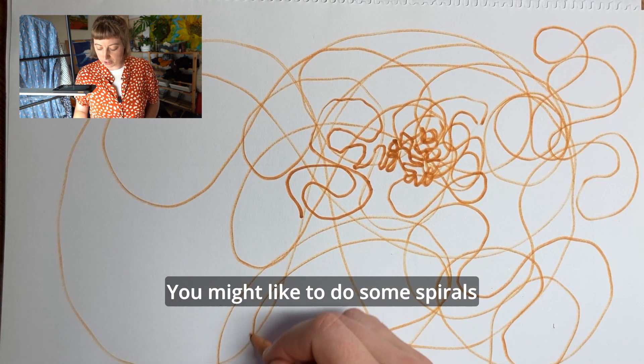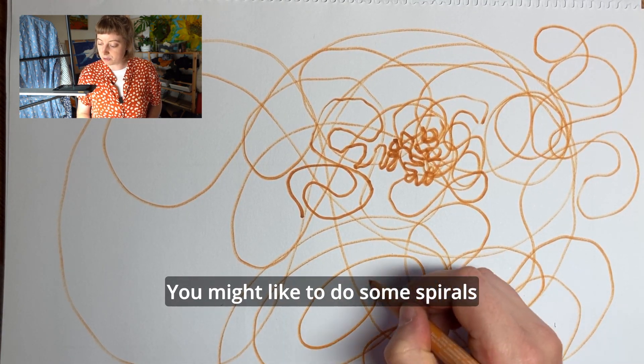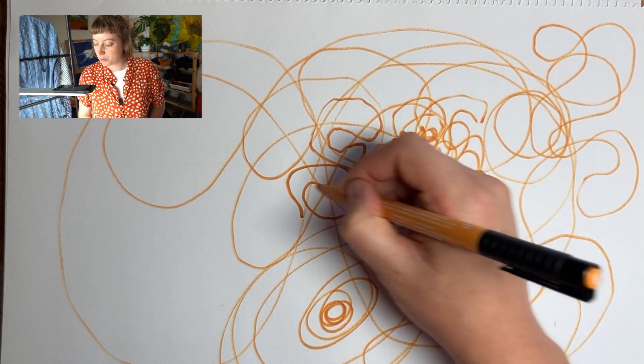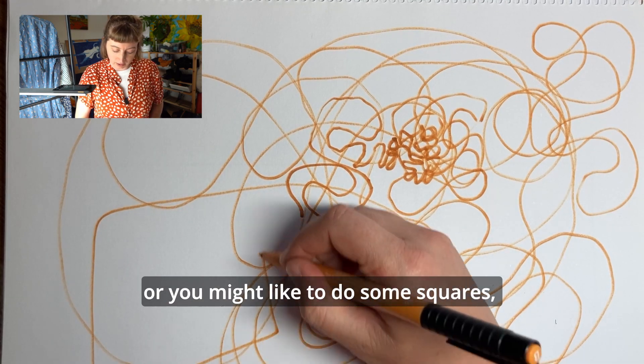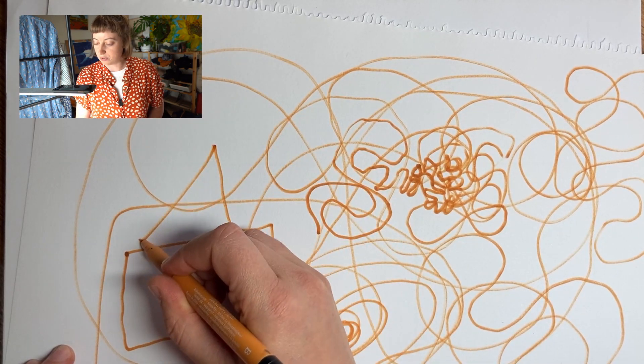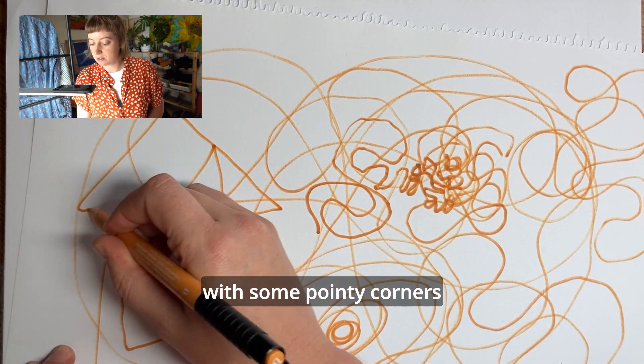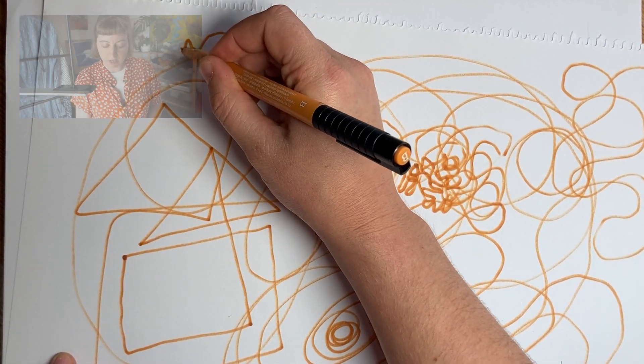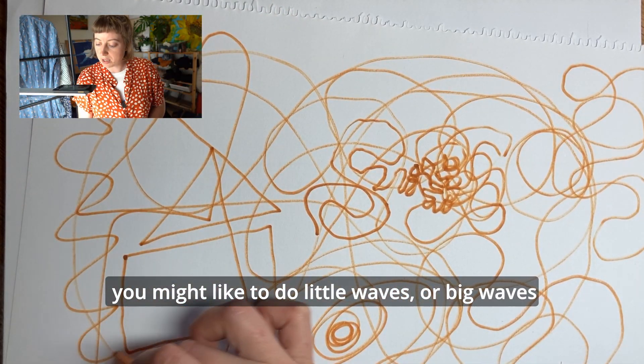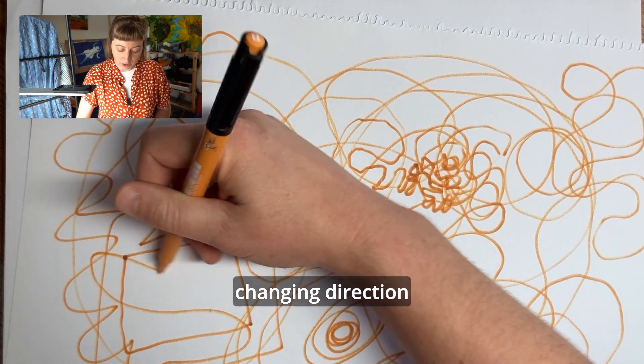You might like to do some spirals, or you might like to do some squares with some pointy corners. You might like to do little waves or big waves, changing direction.